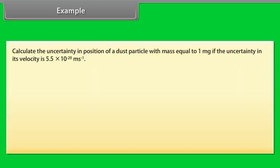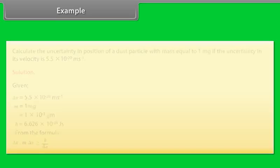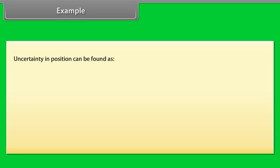For example, calculate the uncertainty in the position of a dust particle with mass equal to 1 mg if the uncertainty in its velocity is 5.5 × 10⁻²⁰ m/s. Solution: Given delta V equals 5.5 × 10⁻²⁰ m/s, M equals 1 mg equals 1 × 10⁻³ g, H equals 6.626 × 10⁻³⁴ J·s. From the formula: delta X times M times delta V is greater than or equal to H upon 4π. Uncertainty in position: delta X is greater than or equal to H upon 4π M delta V.